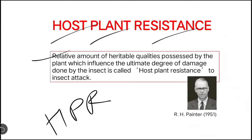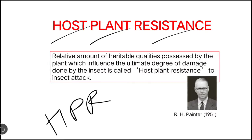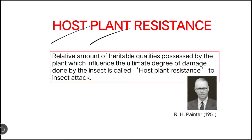The definition of HPR is: it is the relative amount of heritable qualities possessed by the plant which influence the ultimate degree of damage done by the insect. Now I will explain the exact meaning of this definition.